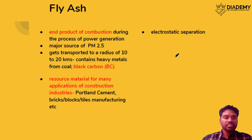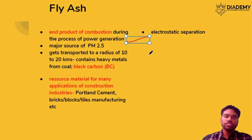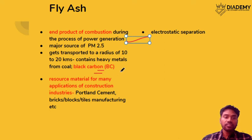The first topic is fly ash, generally a product of thermal power generation. When coal is used to produce power, fly ash is generated and can travel up to 20 to 30 kilometers. It deposits on surfaces and, due to rain, may leach into groundwater causing public health issues.